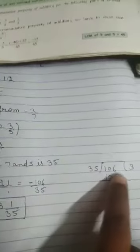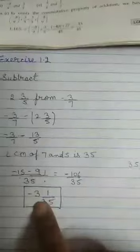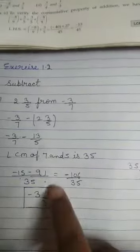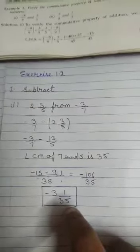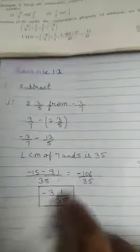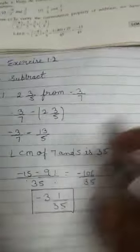Then we divide 106 from 35. So the final answer is minus 3, 1 upon 35. In this question, two parts is also there, so please complete all three parts in your CW copy.